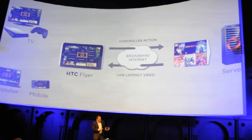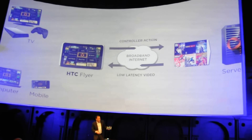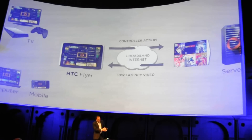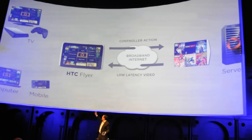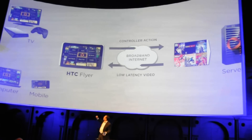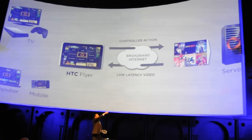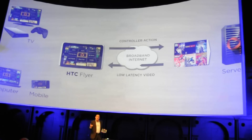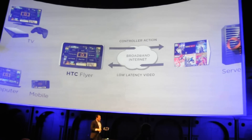In this case, this Flyer is actually running games that are in the data center in Belgium, about 1,000 kilometers from here. If you look at the diagram, we have different devices. OnLive also works on computers and TVs, but on a mobile device, when you touch the screen, the signal goes up through the internet to the server that's actually running the real video game. Then using a new technology we developed, we compress the video instantaneously and stream it through the internet, and it appears on the screen so fast that perceptually, it seems like the game is running locally.